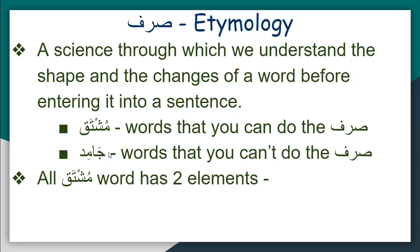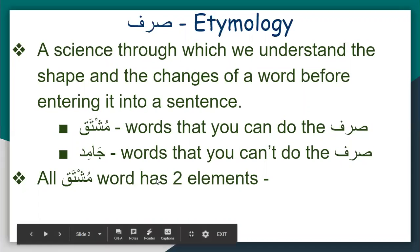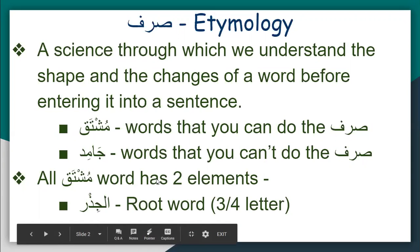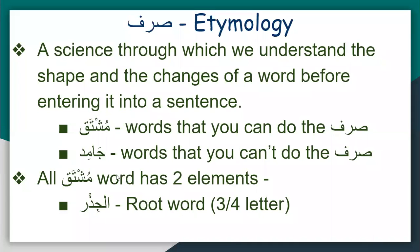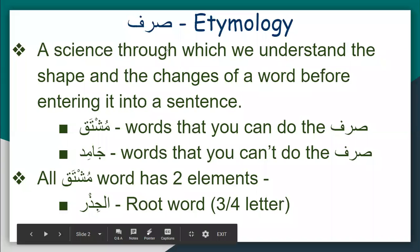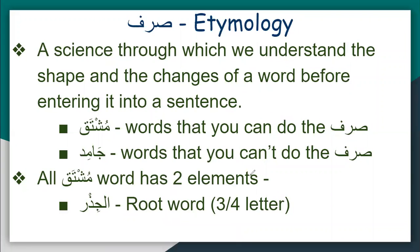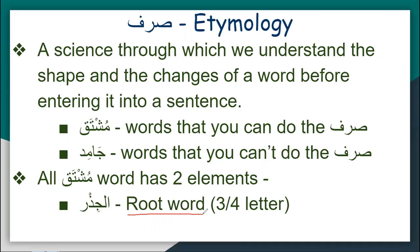In every Mushtaq word — those words that we can make Sarf of — there are two elements. The first element is its root word. Think of it this way: every Arabic word, no matter how big or small it looks, is boiled down to some root letters. Approximately 90% of Arabic has three root letters; it can sometimes go to four, but nothing more or less than that.